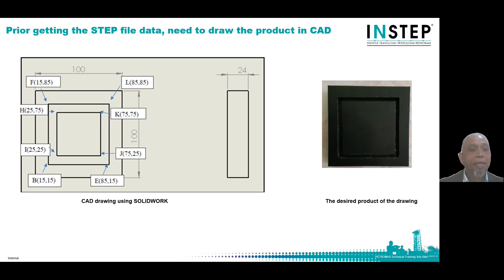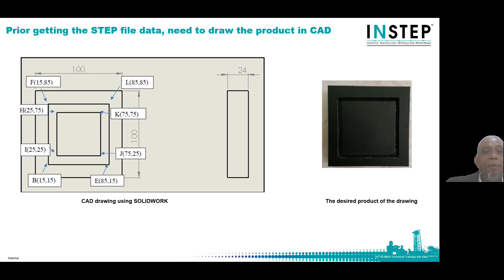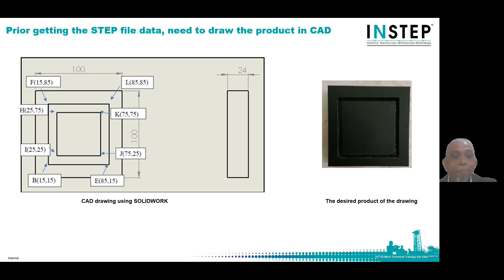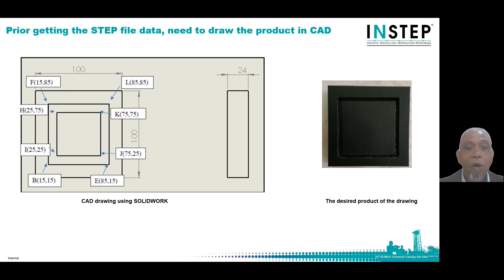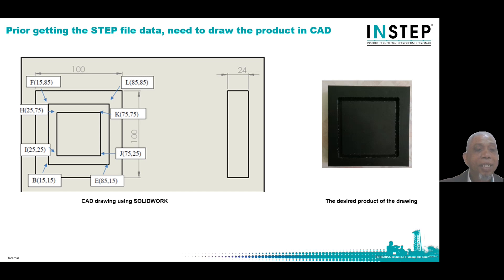In generating the G-code, the data from STEP 5 is extracted using an algorithm of geometric data extraction (GDE), before transferring the data needed into a programming interface to ensure that the G-code is correct and no error occurs. The coding is used in machining to validate the G-code is correct and the information extracted from STEP 5 can be used and function for machining.